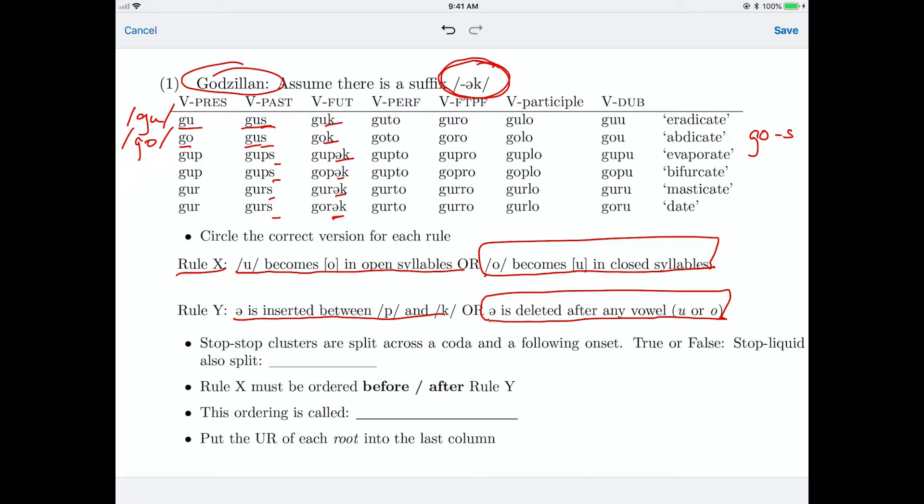Once we see that, actually, once we've gotten that far, let's answer the next question, which asks about how clusters are syllabified. So it says stop-stop clusters are split across a coda and a following onset. And so let's look at an example of that. Here, we've got two stops in a row, right? This must be underlyingly g-u-p, because it's a constant g-u-p, g-u-p, g-u-p, g-u-p, g-u-p.